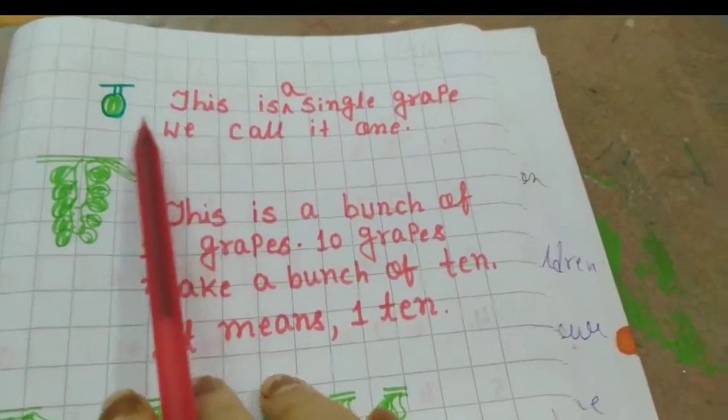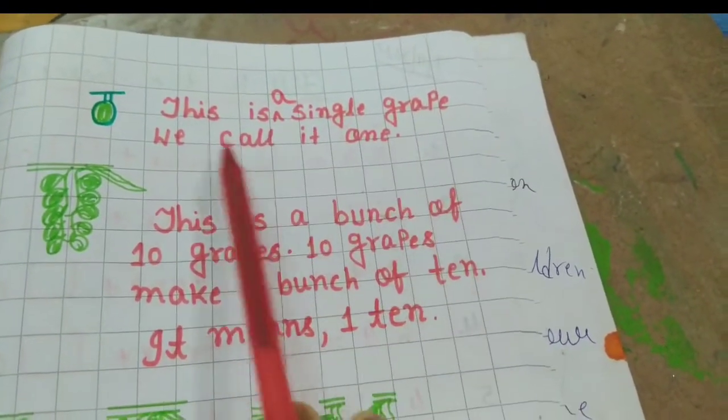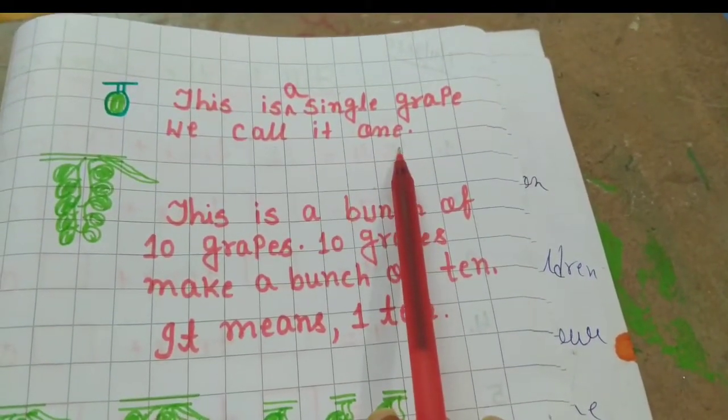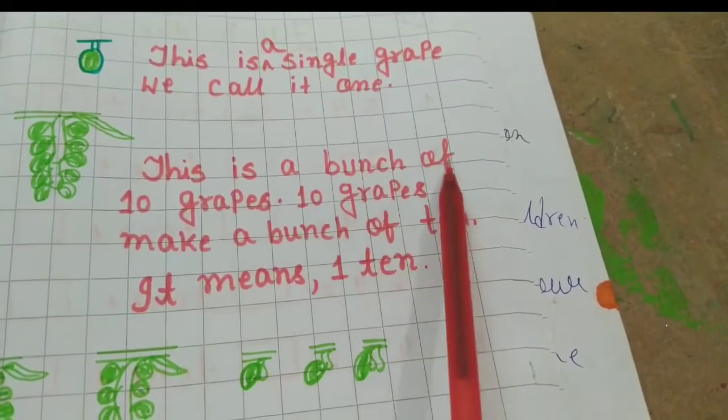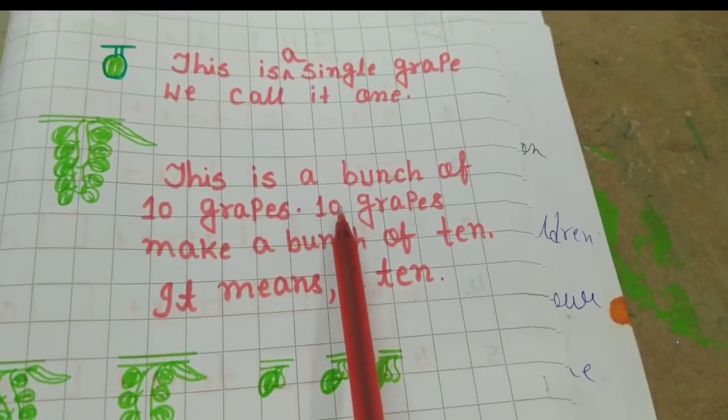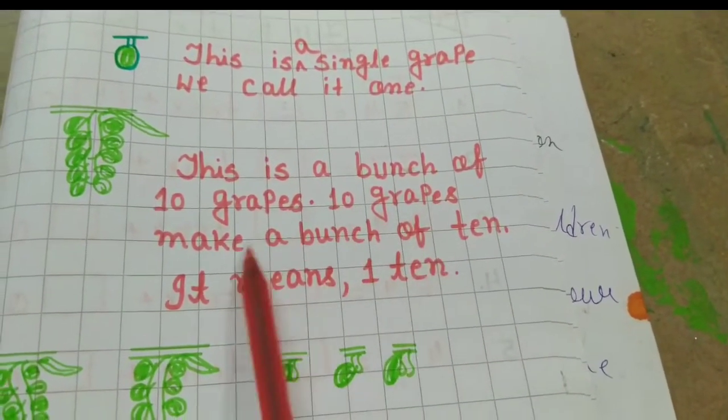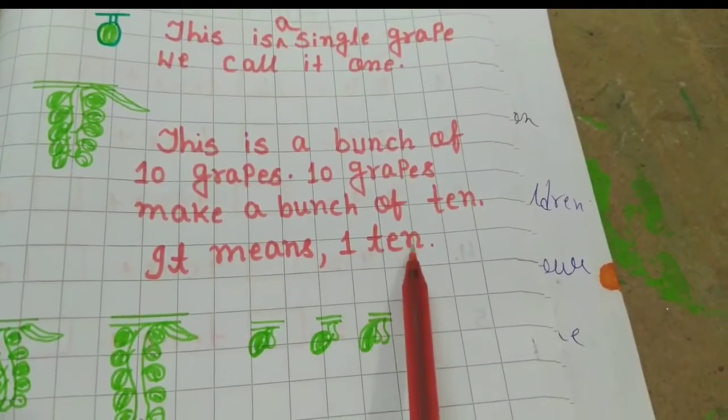Here you can see I have drawn 1 graph. This is a single graph. We call it 1. Then this is a bunch of 10 graphs. 10 graphs make a bunch of 10. It means 1 ten.